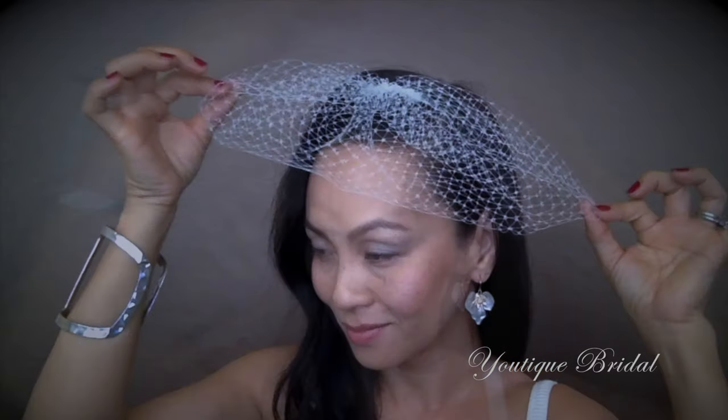The next look I call the fascinator. You can wear the first look to the ceremony and then this look to the reception. So place it at an angle over your head. And instead of covering your eye, you're just going to fold it under and then you're just going to have two points at each end.